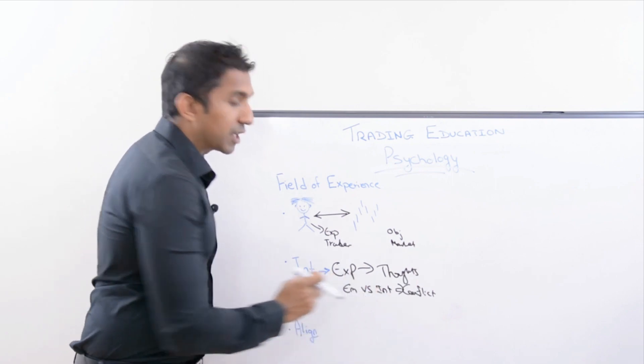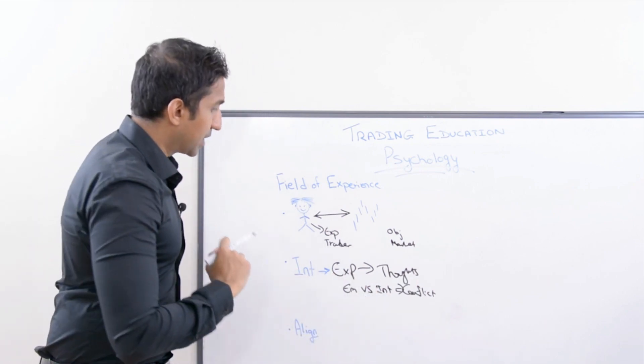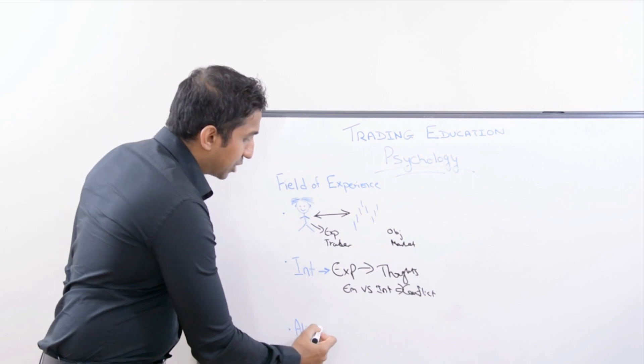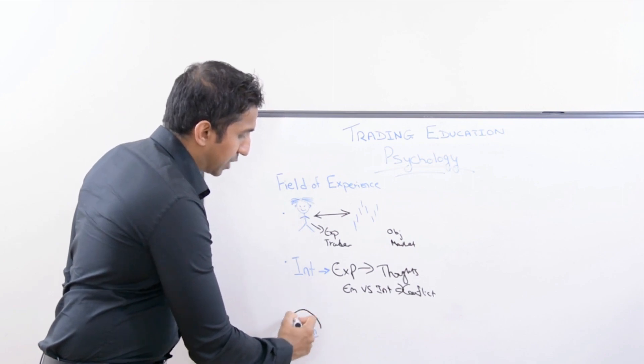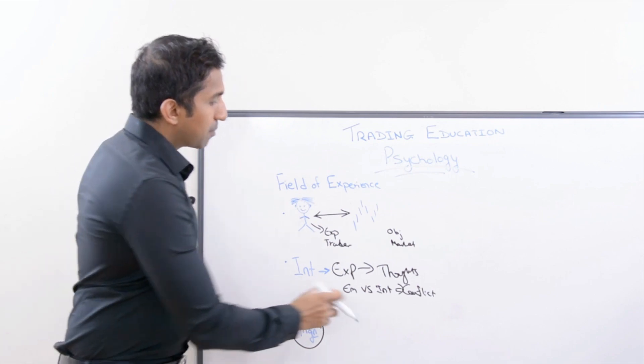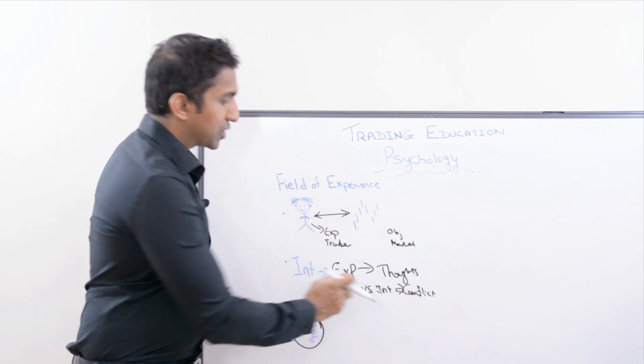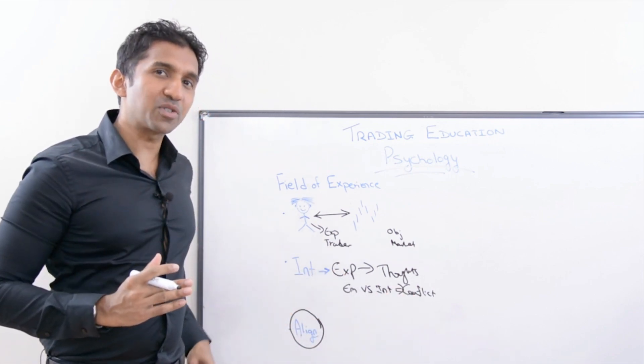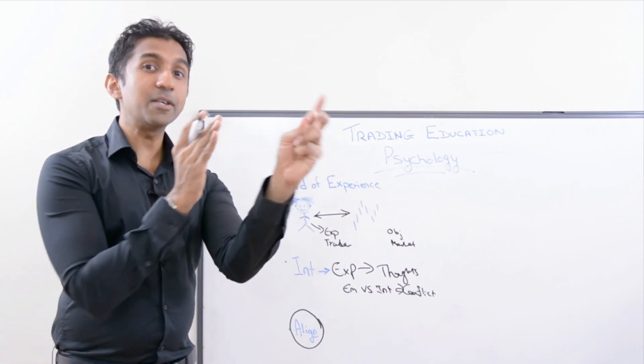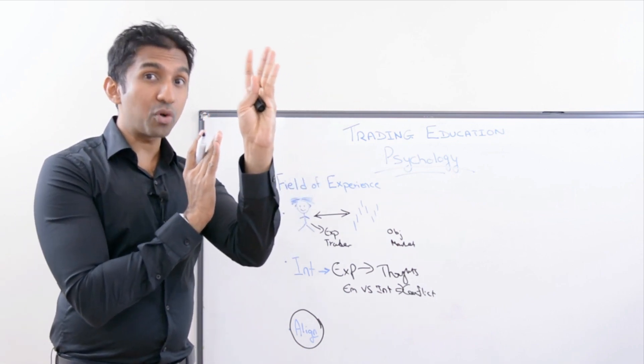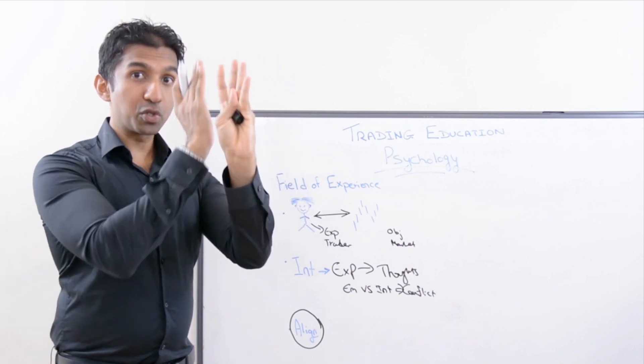So the emotions start to conflict with the intellectual thoughts. The natural question would then be: Tiru, this is all good, but how do we align these thoughts then so that we do not get this conflict? How do we align the emotions to the intellectual thoughts so that you have total alignment and don't have any conflict?